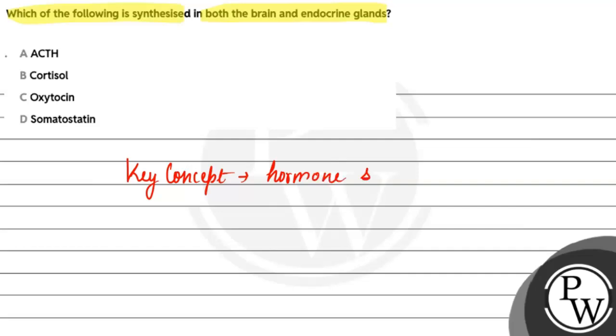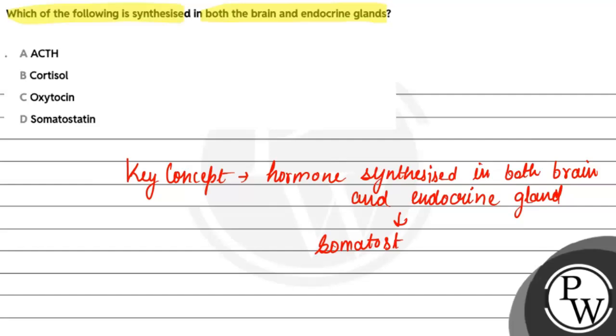is synthesized in both brain and endocrine gland. The hormone synthesized in both brain and endocrine gland is somatostatin. Somatostatin is an inhibitory hormone.